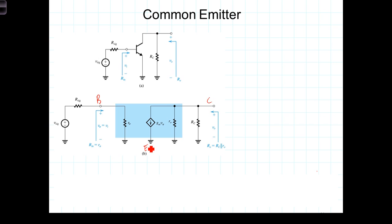From observation, R in, which is the ratio of V in divided by I in, so R in is simply equal to R pi, the effective resistance or the small signal model resistance from the base to the emitter.